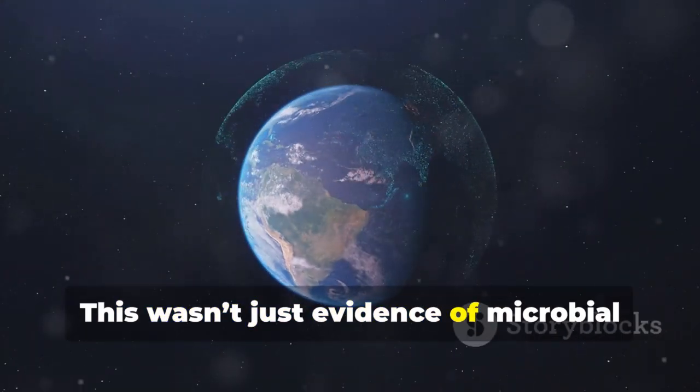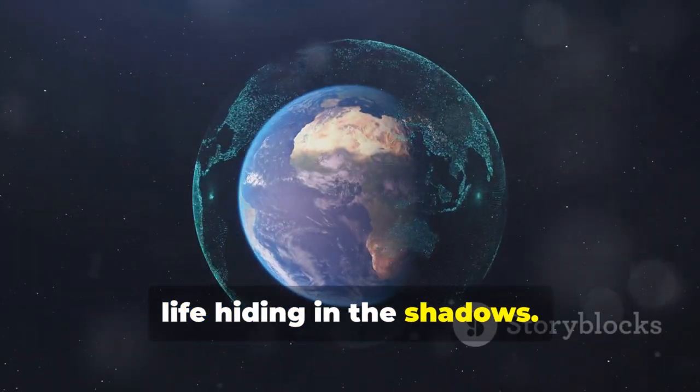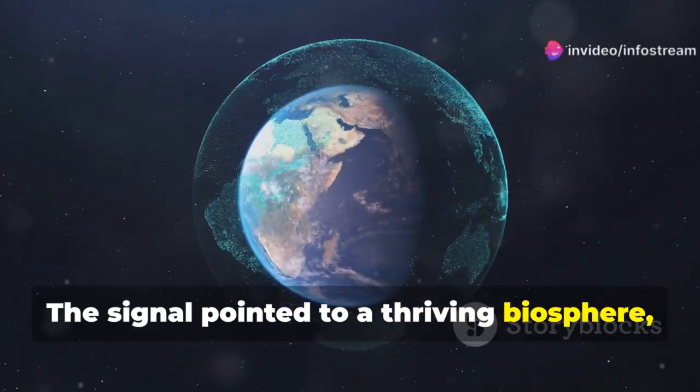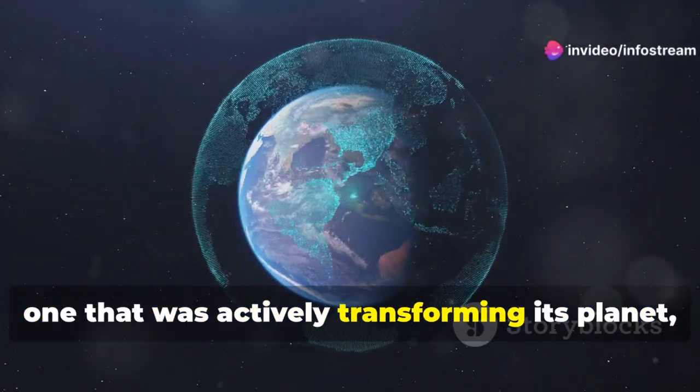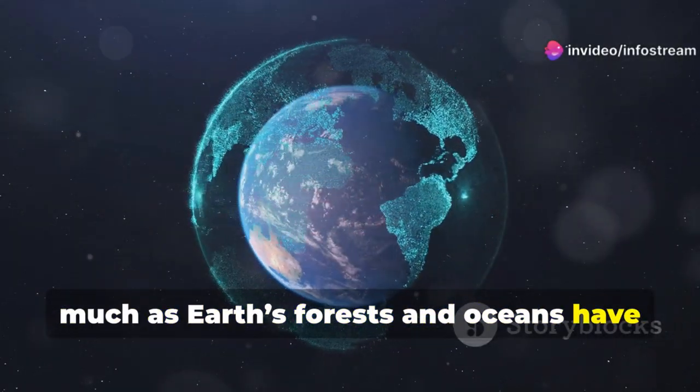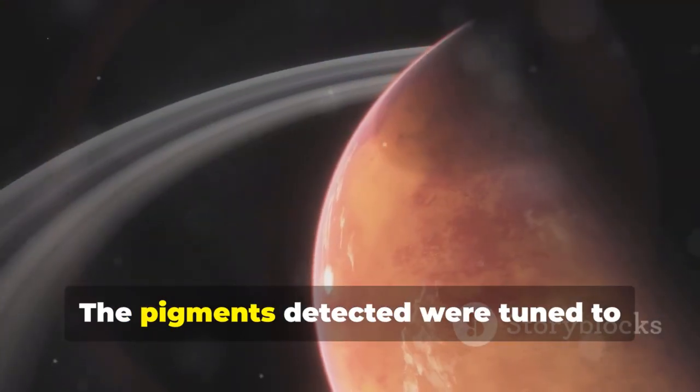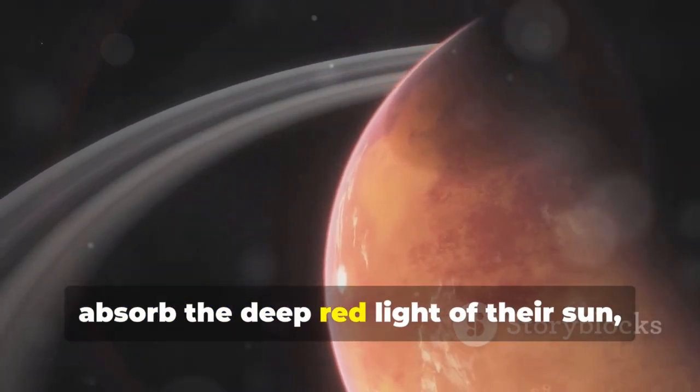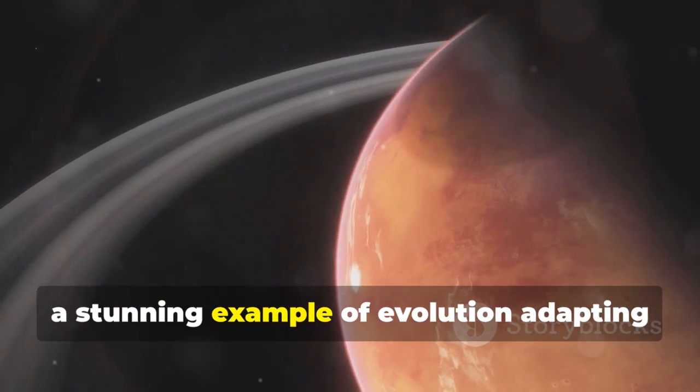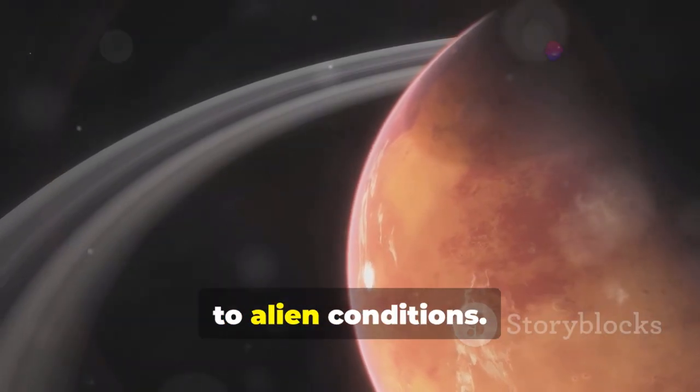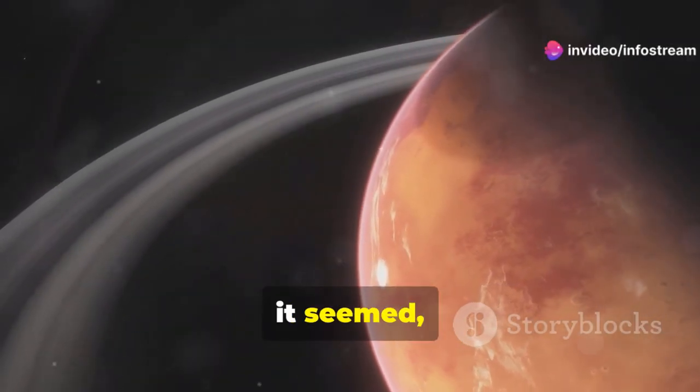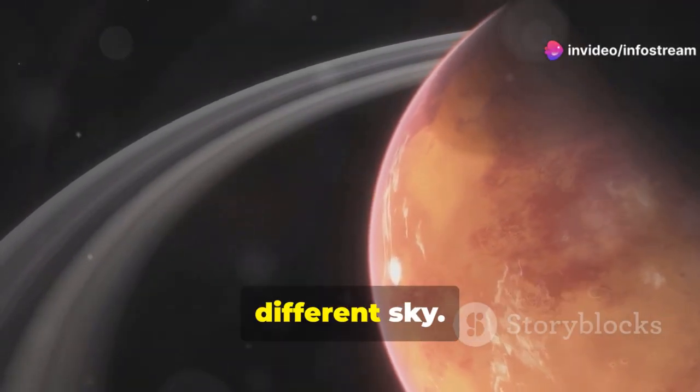This wasn't just evidence of microbial life hiding in the shadows. The signal pointed to a thriving biosphere, one that was actively transforming its planet, much as Earth's forests and oceans have shaped our own world. The pigments detected were tuned to absorb the deep red light of their sun, a stunning example of evolution adapting to alien conditions. Life, it seemed, had found a way to flourish under a different sky.